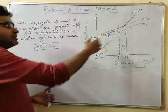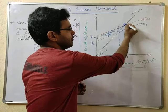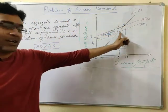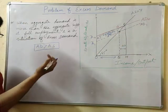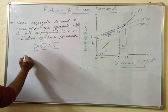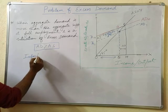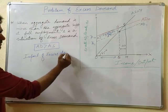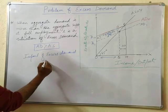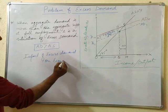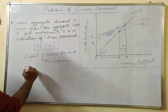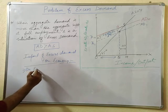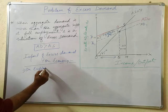The economy is in equilibrium at point E, which is higher than the required point F. Now we will see the impact of excess demand on the economy. The first impact is on the level of employment.